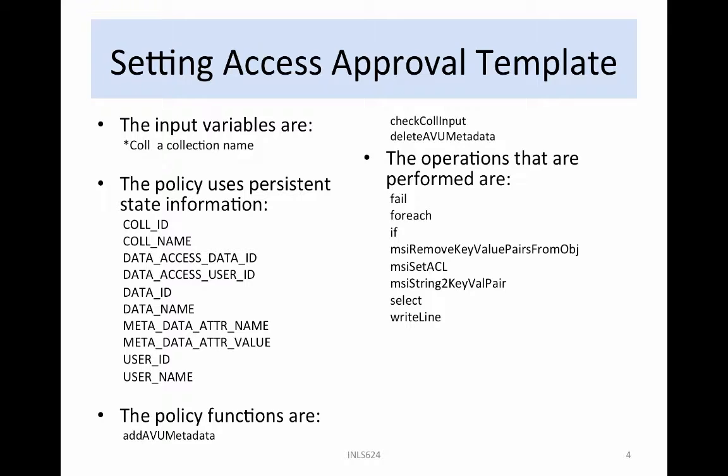Metadata adder value will be set back to zero. User ID is the internal user ID, and user name is the user name. The policy functions that are used are add AVU metadata to add the access approval flag to the file, check call input to verify that the input collection exists, and delete AVU metadata to delete access approval on a file if it is set incorrectly.